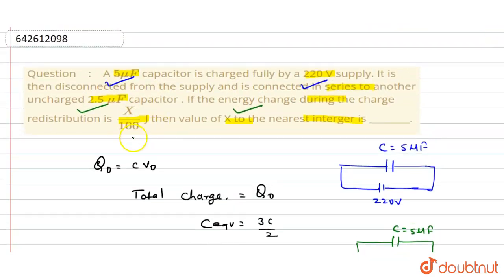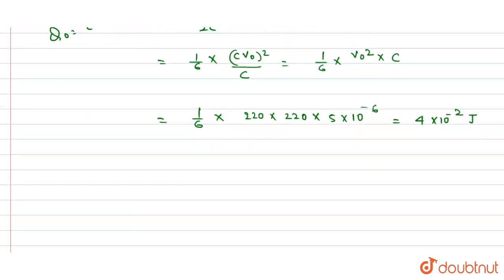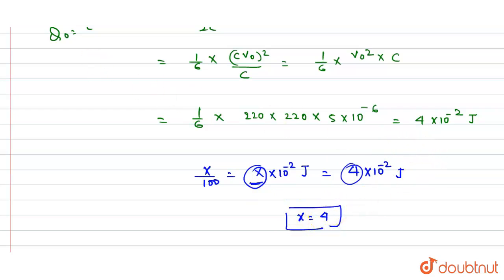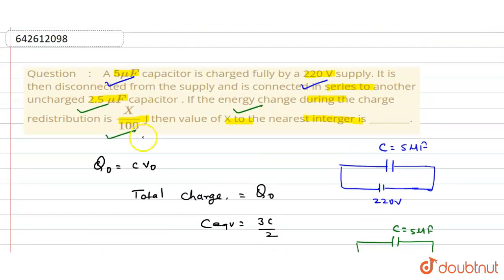In the question, the energy redistribution is given as x/100 Joules, which equals x × 10⁻² Joules. Equating this with our result of 4 × 10⁻² Joules, we find x = 4. So the value of x to the nearest integer is 4. I hope you understood, thank you.